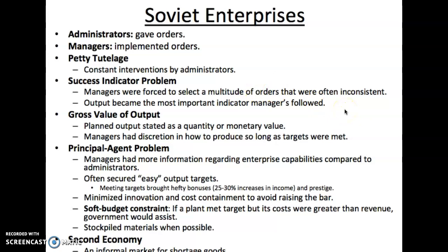There was a success indicator problem. Managers would often receive orders that were inconsistent — they might be told to produce more cars but at the same time cut their labor. Those two might not go together, so they had to choose. They would choose the goal that was going to satisfy the administrators the most, and that was almost always the output. So there was a premium put on meeting quotas and satisfying output expectations — and as long as you did that as a manager, you were in good standing with the administrators, even if lesser agendas were not met.